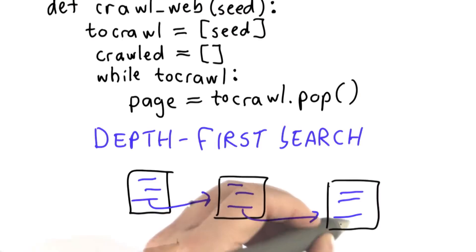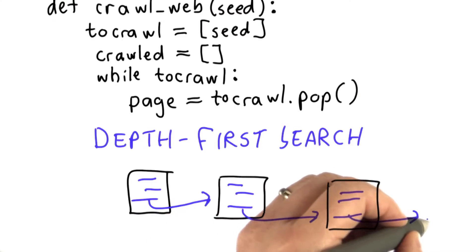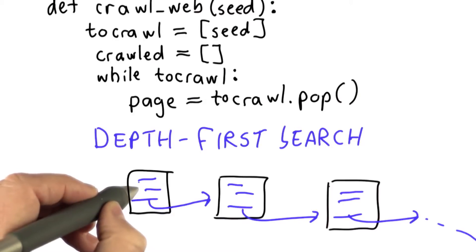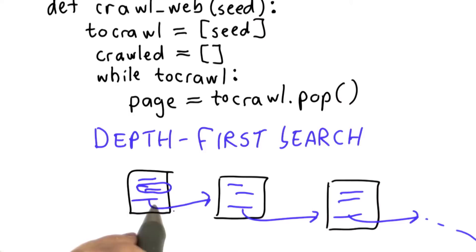We're going to follow that, we're going to get to that page, and we're going to follow the last link on that page. So this is why it's a depth-first search. We don't get to look at the second link on the first page until we followed all the links that we can reach from the last link on the first page.